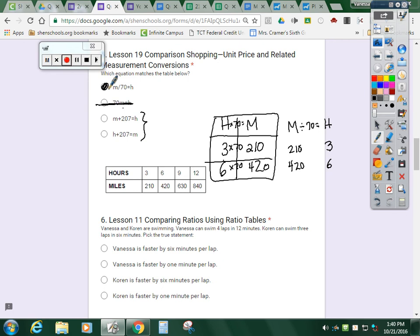Number six. Vanessa and Corinne are swimming. Vanessa can swim four laps in 12 minutes. Corinne can swim three laps in six minutes. So now you're trying to figure out their time per one lap. To do four, I'm going to scale it down to one, divide by four, divide by four. Vanessa can swim one lap in three minutes.